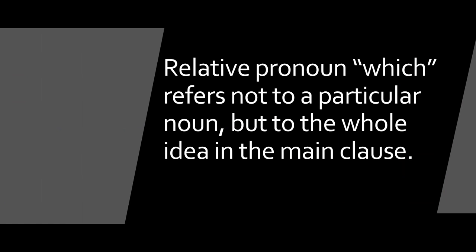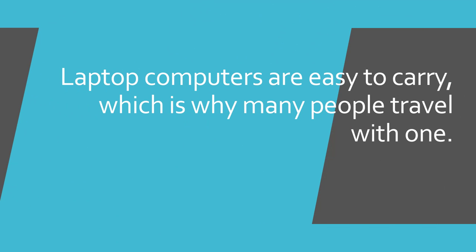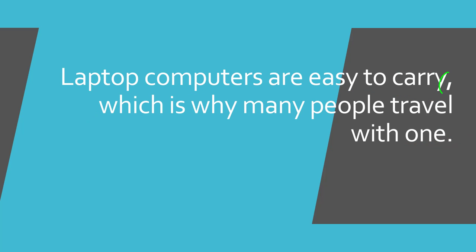In these relative clauses, the relative pronoun 'which' refers not to a particular noun, but to the whole idea in the main clause. Non-defining relative clauses are always the second clause in a two-clause sentence. Because these clauses are non-defining, they are set off from the main clause by a comma. This type of non-defining relative clause adds information or a comment that applies to the first clause, but it is not essential information.